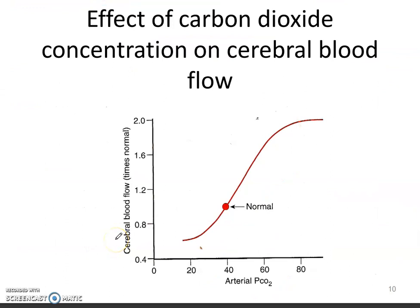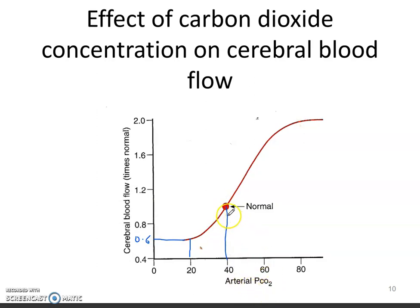We will now study the effect of carbon dioxide concentration on cerebral blood flow. Looking at the graph, the x-axis shows arterial partial pressure of CO2 and the y-axis shows cerebral blood flow. When arterial CO2 is around 20, the cerebral blood flow is approximately 0.6. The normal value of arterial CO2 is 40. When arterial CO2 increases, the cerebral blood flow also increases, and when it reaches 80, the cerebral blood flow is also increasing. So when more carbon dioxide is generated in the brain, the cerebral blood flow to the brain increases.